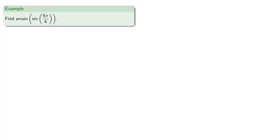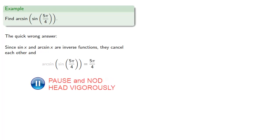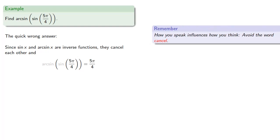Suppose we want to find the arc sine of the sine of five pi fourths. Here's the quick wrong answer: since sine x and arc sine x are inverse functions, they cancel each other, and arc sine of sine of five pi fourths is five pi fourths. This illustrates how your speaking influences how you think. Try to avoid the word cancel, because it leads to incorrect thinking.